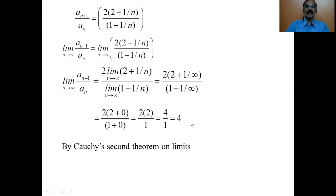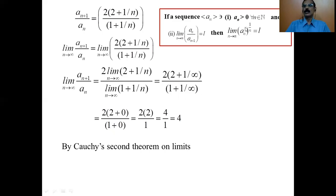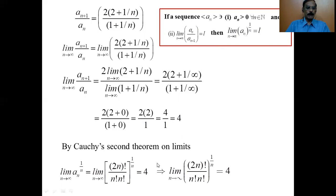By Cauchy's Second Theorem on limits: the first condition is that a_n is greater than 0 for all natural numbers n, which is trivially true since n is a natural number and hence positive. We have shown the limit of the ratio a_{n+1}/a_n equals 4. Therefore by Cauchy's Second Theorem, the limit of the n-th root of a_n also equals 4. Hence the limit of 2n factorial divided by n factorial times n factorial, to the power 1/n, as n tends to infinity, equals 4.